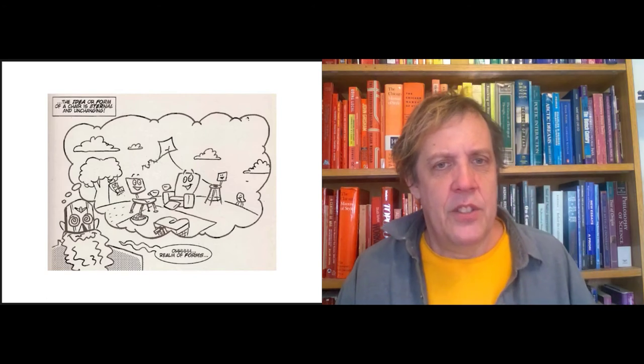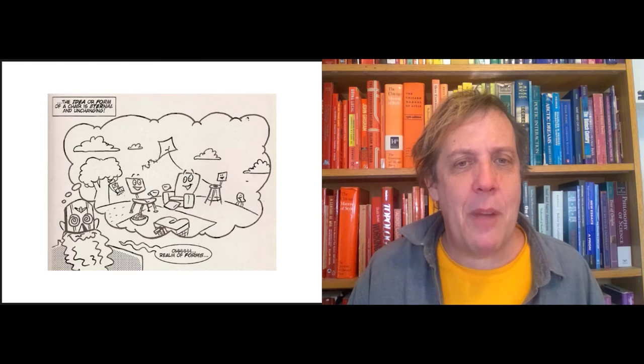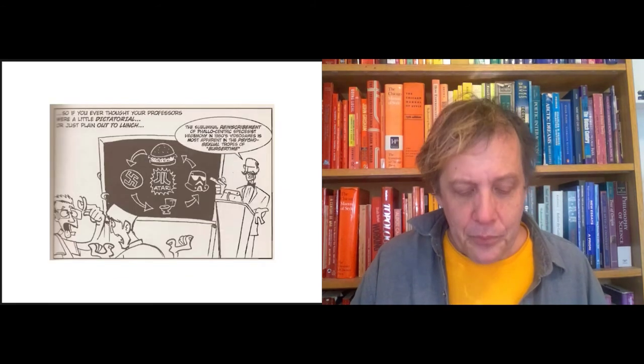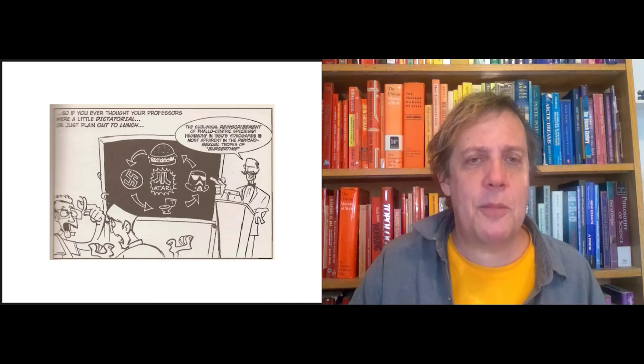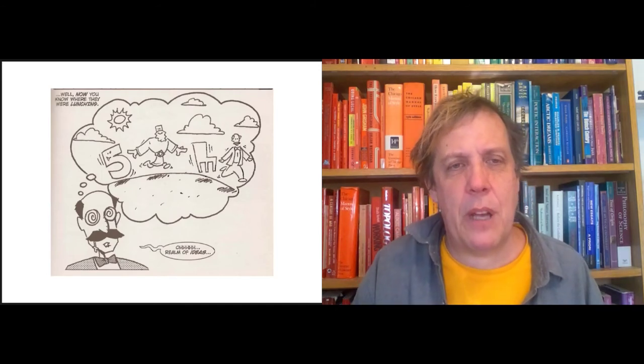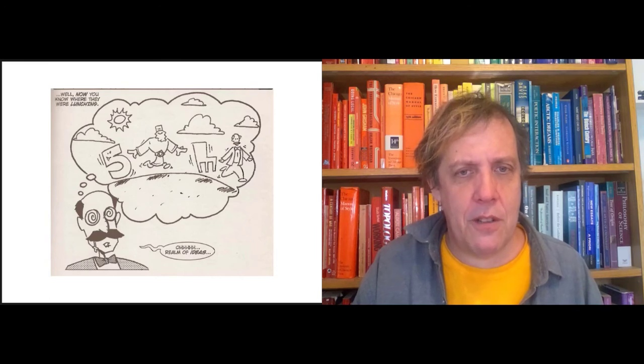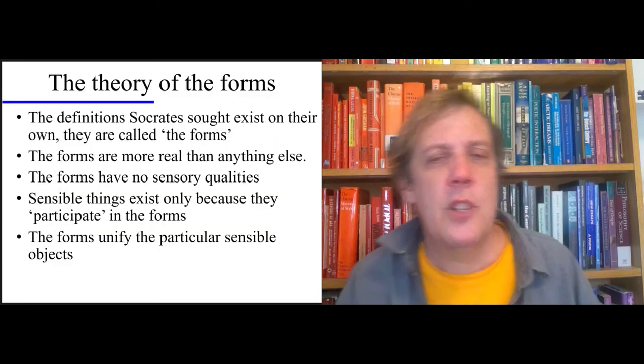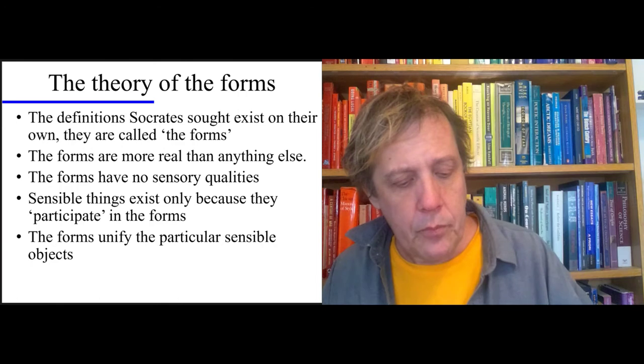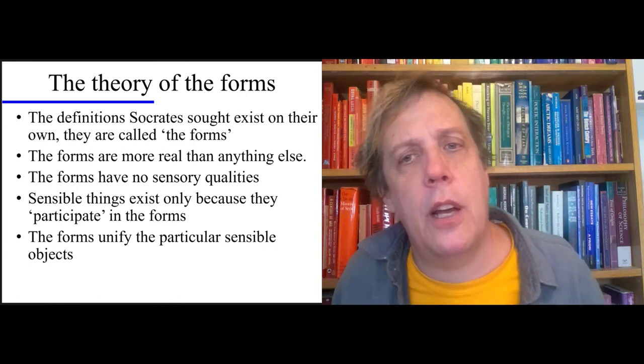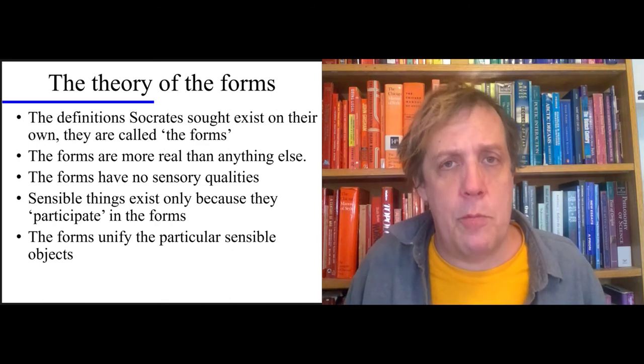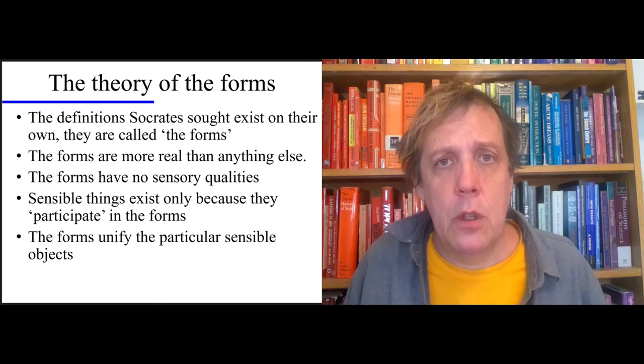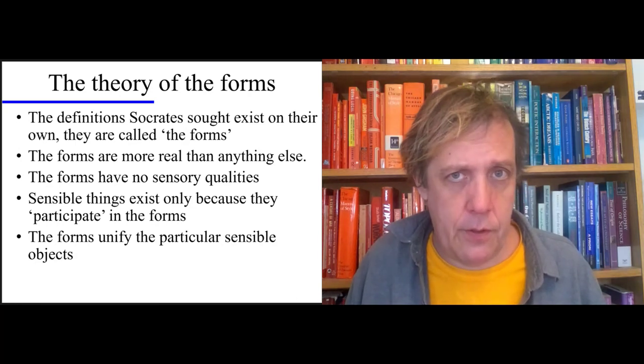So it's the realm of the forms. We can imagine it. We've got chairs and ideas and numbers. And honestly, a lot of philosophers may seem like they are just total space cadets. And I suppose we are, but it's because we spend time in the realm of ideas with the numbers and the chairs. Pure ideas. I want to give you a quick rundown of the theory of the forms. The definitions that Socrates sought after exist on their own. They are called forms. There's a form of piety and a form of virtue. Just like there is, and they exist the same way the number two exists, however that is.